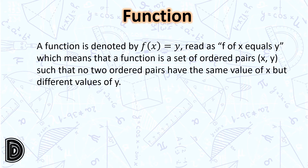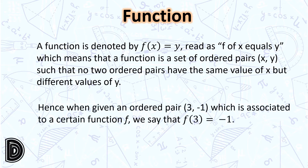A function is denoted by f(x) = y, which means that the function is a set of ordered pairs (x, y) such that no two ordered pairs have the same value of x but different values of y. Hence, when given an ordered pair (3, -1) which is associated to a certain function f, we say that f(3) = -1.